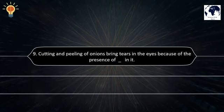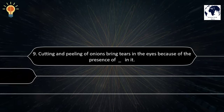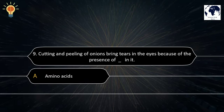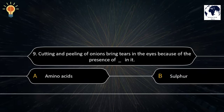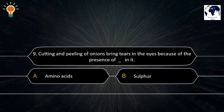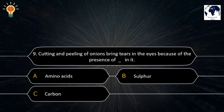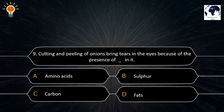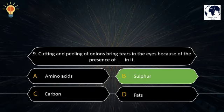Question number 9. Cutting and peeling of onions brings tears to the eyes because of the presence of which substance? Option A: Amino acids. Option B: Sulphur. Option C: Carbon. Option D: Fats. The correct answer is Option B — Sulphur.